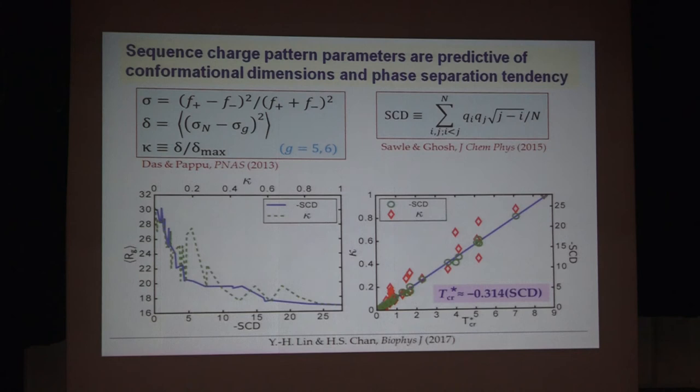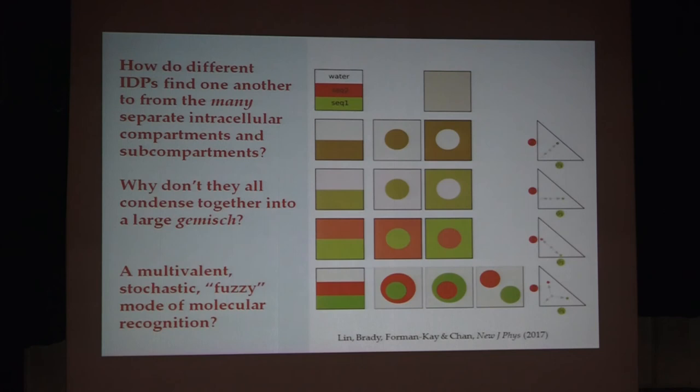In the last few minutes, let me talk about something we just published about a month ago. It addresses the question: we have many IDPs in the cell, so how come they don't all phase-separate into one giant droplet? There must be some kind of molecular recognition mechanism going on. Of course this is very complicated — it involves RNA, other kinds of proteins. So this is the hydrogen atom approach to this — the most simple way to see whether we can get something out by just looking at the charge pattern.